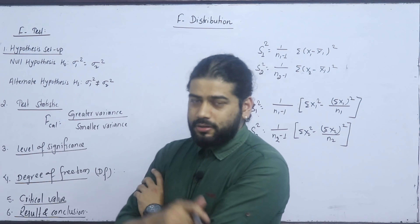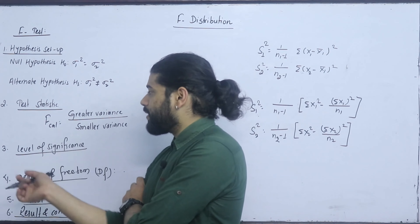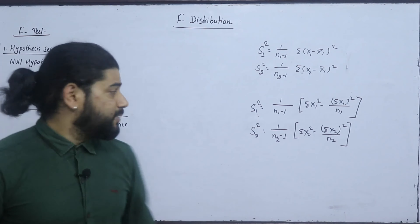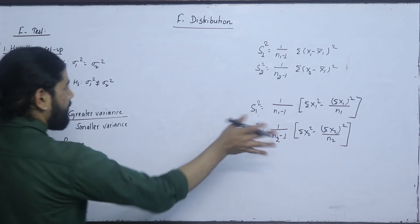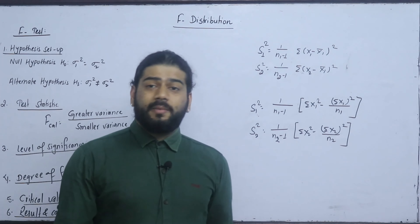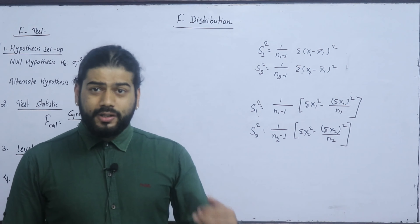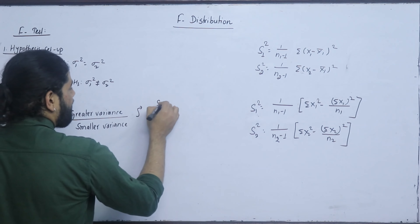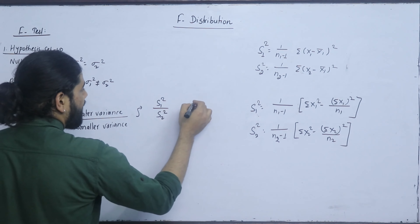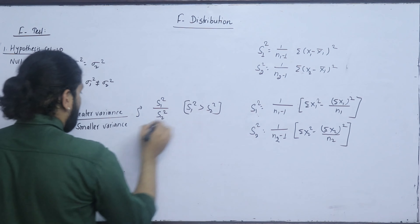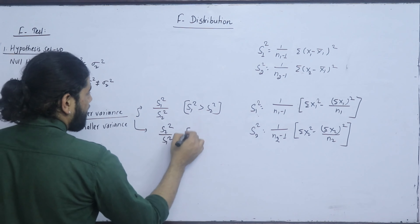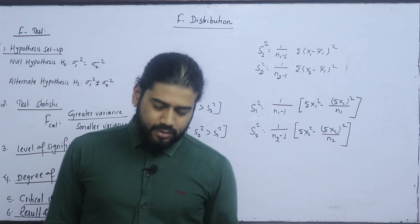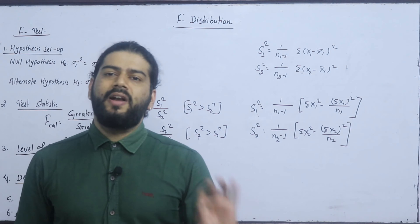Now the test statistic is: greater variance upon smaller variance. Greater variance is greater than the null; if the null is smaller, then the null is smaller. There is a sample to test the variance. If the variance is the same, we will get the test. Then we will see S1 and S2 — if S1 is greater than S2, then S1 squared over S2 squared. This is one point minimum. The formula is: greater variance upon smaller variance.